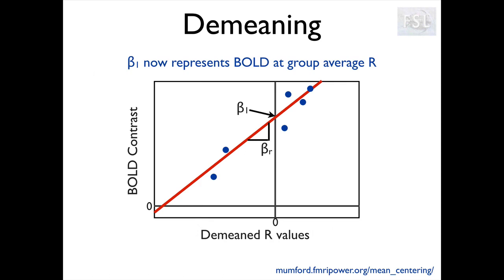What we need to do is demean the confound: calculate the mean value across subjects, subtract that amount from each subject's value, and use that in our design matrix. And now as you can see, beta one does represent the group mean BOLD.